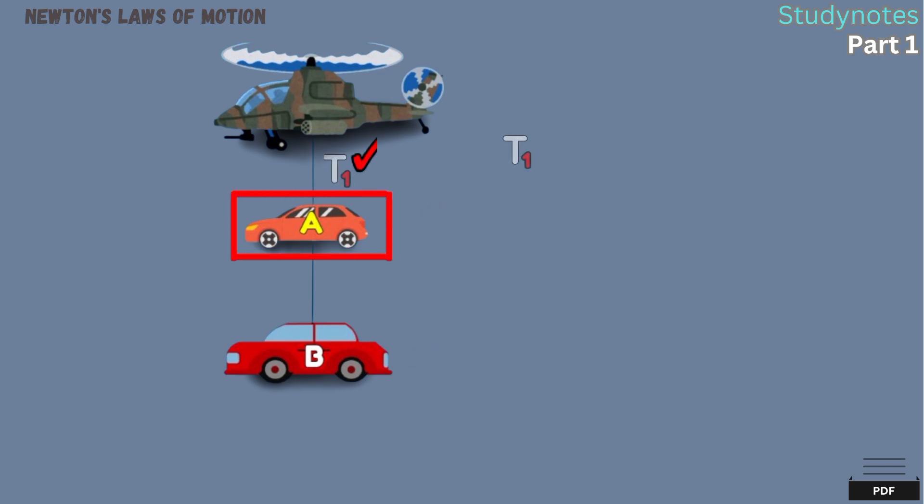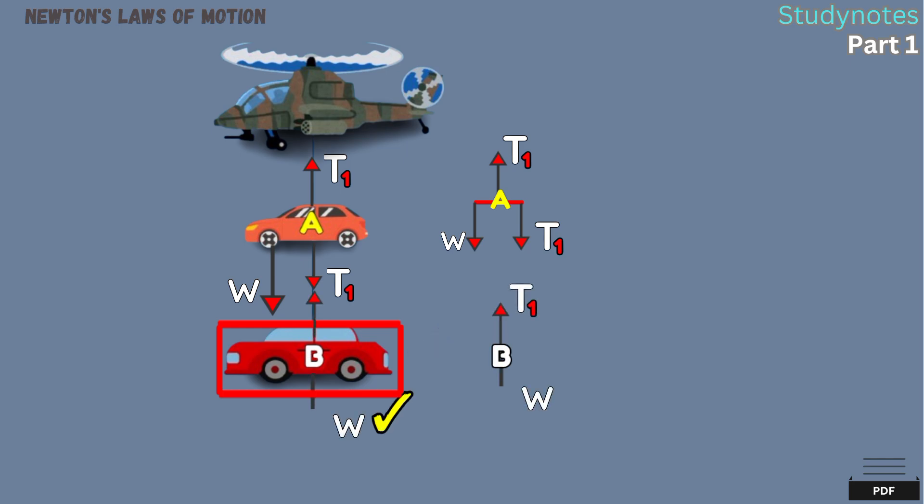Object A will have tension force from here facing upwards. It will have tension force on the rope that connects object A with object B. And object A will have weight force facing downwards. Only three forces which object A has. On object B, there is tension force facing upwards, and weight force facing downwards.